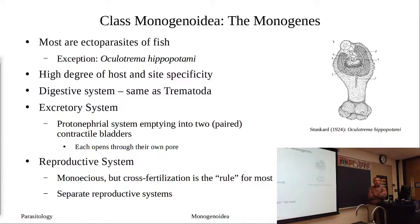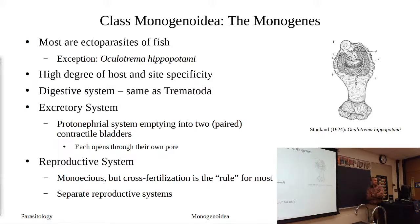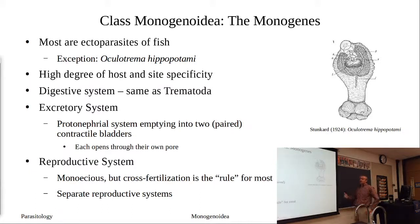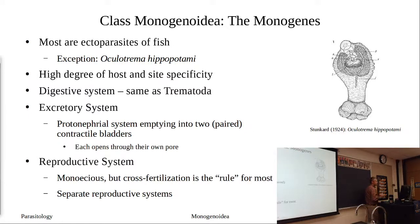On fish, common places include the gills — it may be that they only infect the first gill raker or the first arch, or maybe only the latter arches. Very high degree of host specificity. The digestive system is the same as the trematodes: a blind gut with a mouth, pharynx, and two intestinal branches.